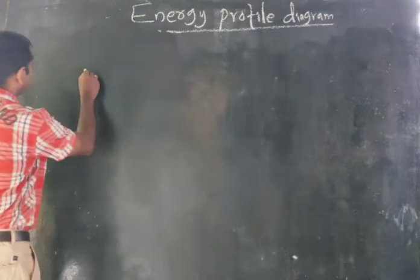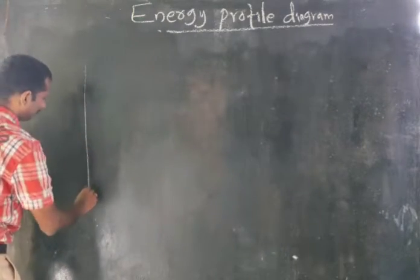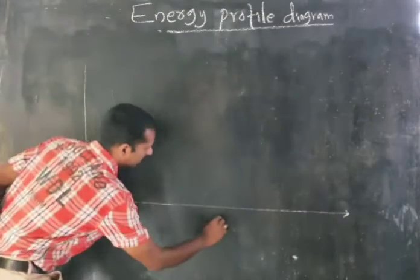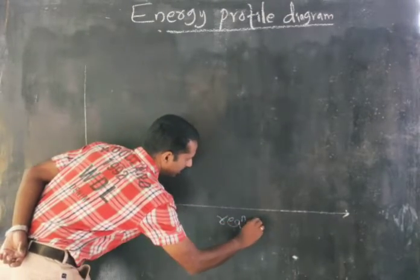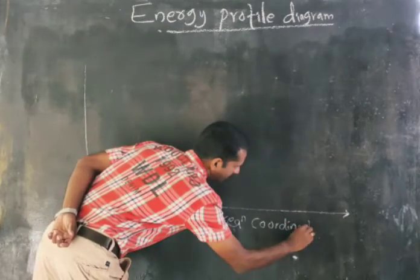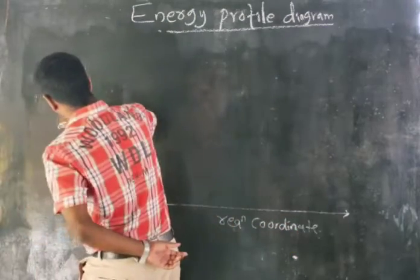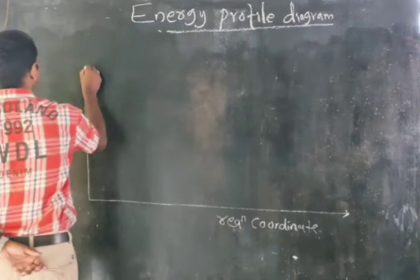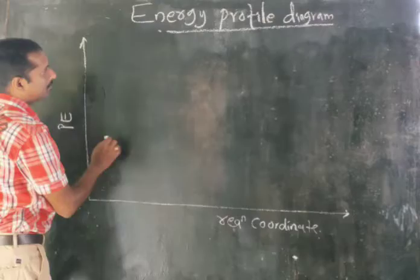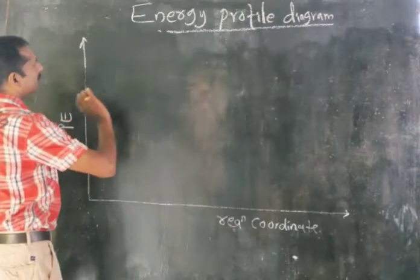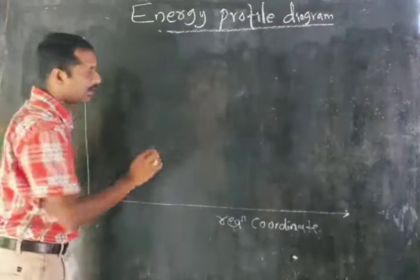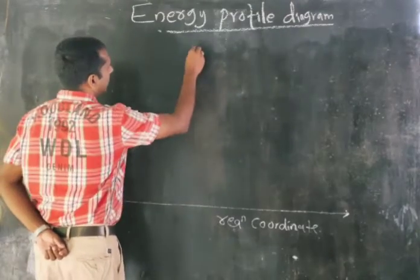This is the reaction coordinate on the x-axis and here is the potential energy on the y-axis. Now remember the SN1 reaction before we go through the diagram.